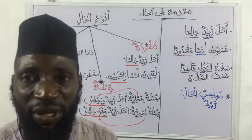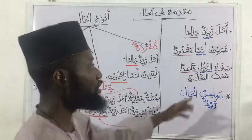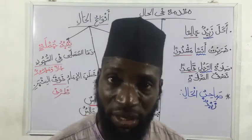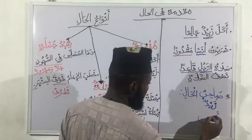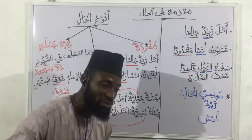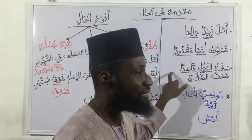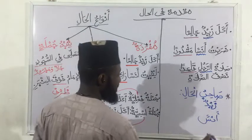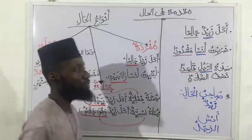In the second sentence — I beat Anas while Anas is tied up — our Sahibu l-Hal is Anas. In the third sentence — Salatu al-Rajuli Qa'idan — the Hal 'Qa'idan' points to the Rajulu (the man), so our Sahibu l-Hal is Rajulu. For every sentence we look at, there should always be a Sahibu l-Hal on a general note.